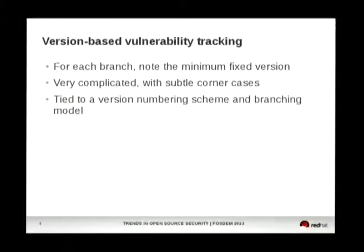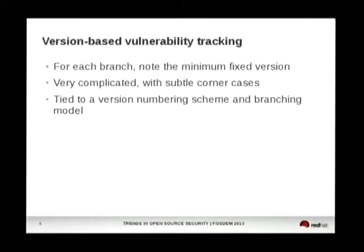So how do we use these identifiers? We have to put the identifier in relation to the software we ship. The first aspect is the package — we have to identify which package is affected, and for each branch we ship we can note a minimum fixed version when we fix the package. This is an approach based on version-based vulnerability tracking, and I wanted to present it as the ultimate approach, but it turns out it's really complicated in some corner cases.